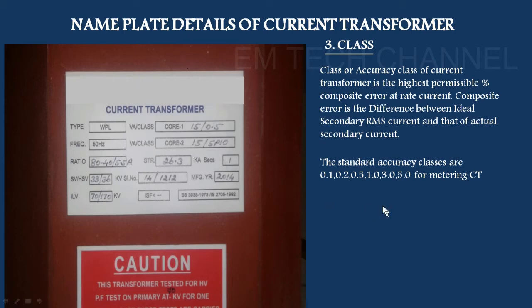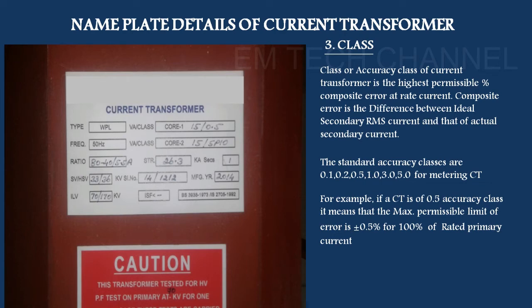For metering class 0.1, there is a 0.1% composite error, meaning 99.9% accuracy. For class 0.2, there is a 0.2% composite error. For CT class 1.5 accuracy, the maximum permissible limit applies at 100% rated primary current. These are the accuracy limits defined by the standard.